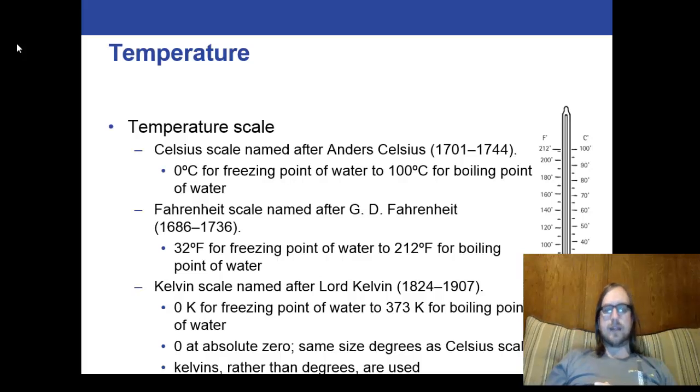When Fahrenheit made his scale, he made the zero point about as cold as you see it on any given day, and 100 degrees is about as hot as you see it on any given day. That's why the water points ended up being so weird, because Fahrenheit didn't base the scale on water. He based it on atmosphere of where he lived. Celsius aligned it with water, and then Kelvin.